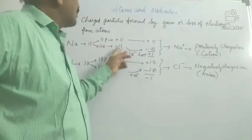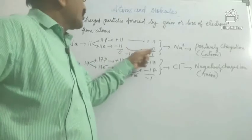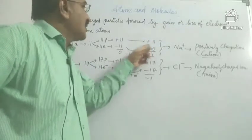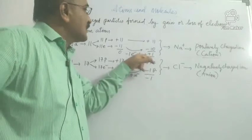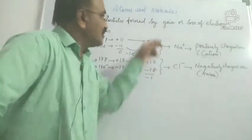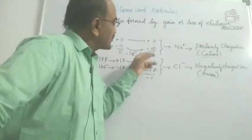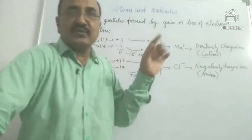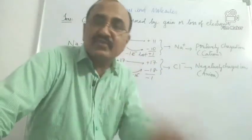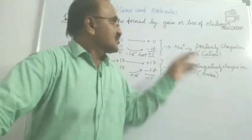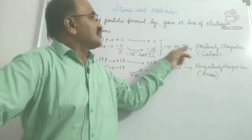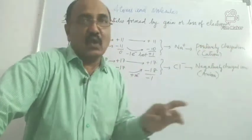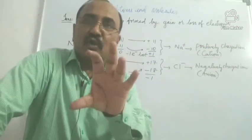As this sodium atom is losing an electron, it now has 11 protons but only 10 electrons. When you check that, the charge becomes plus 1. So 11 minus 10 gives plus 1. That sodium atom is now not a neutral atom — it is a positively charged atom. That positively charged atom we call a positively charged ion, that is a cation. Cation is a positively charged ion.